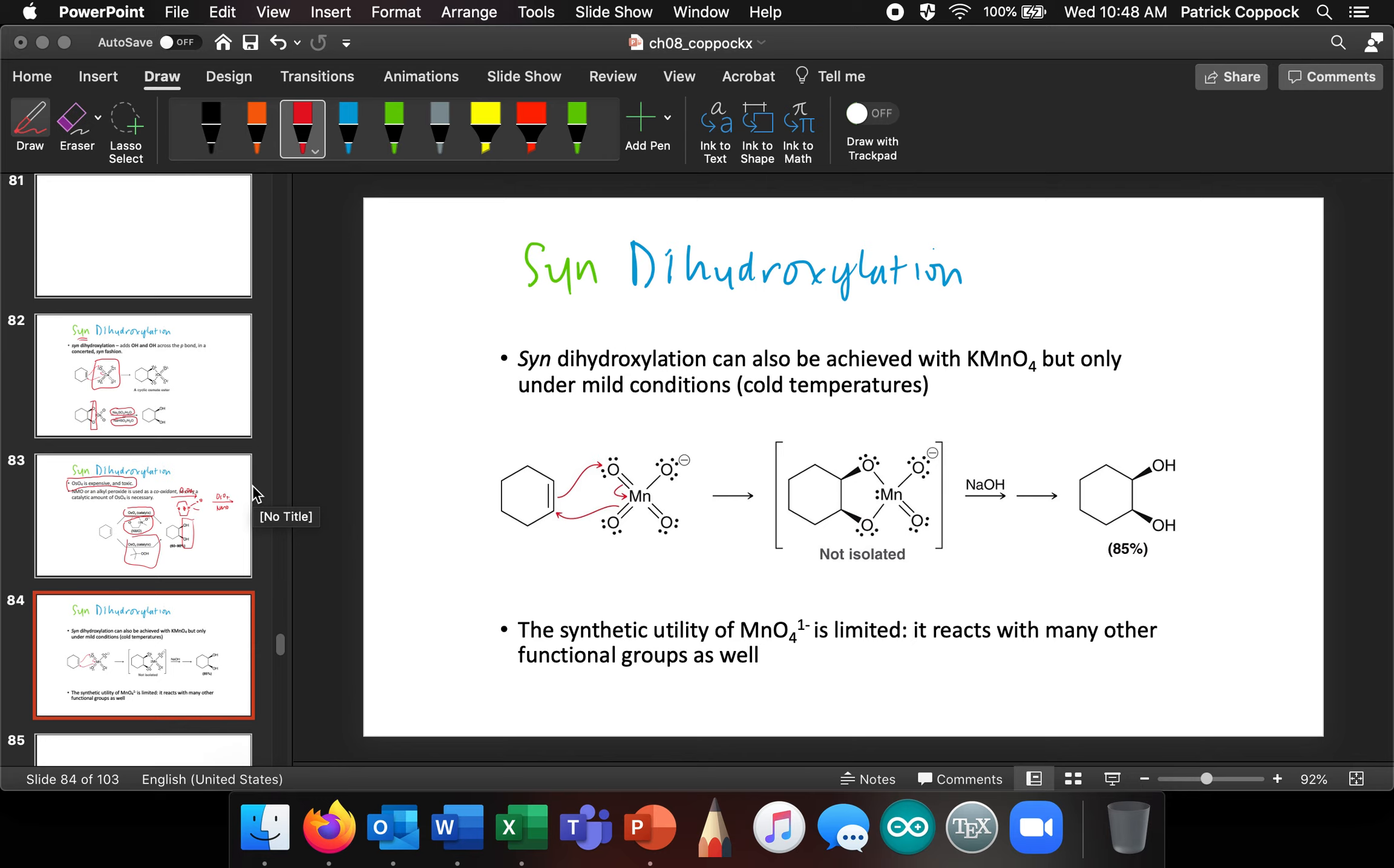So we also have permanganate, which we can get from potassium permanganate. This is not as good. It does do syn-hydroxylation. You can see that, there's my syn-hydroxylation. It does work nicely under mild conditions, such as cold temperatures.